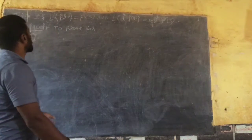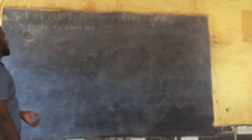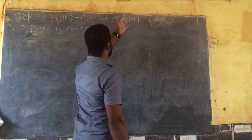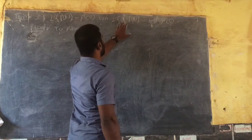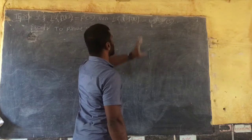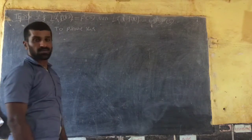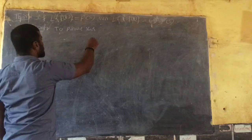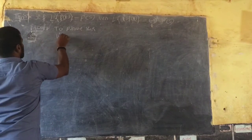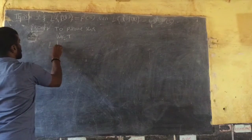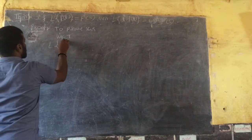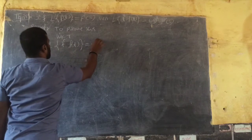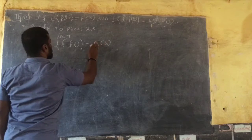Next theorem: if Laplace of f(t) is equal to F(s), then the Laplace of t² · f(t) — that is the second order — equals minus 1 whole squared, so F double dash of s. To prove this, we use the known result: Laplace of t · f(t) equals minus of F dash of s.